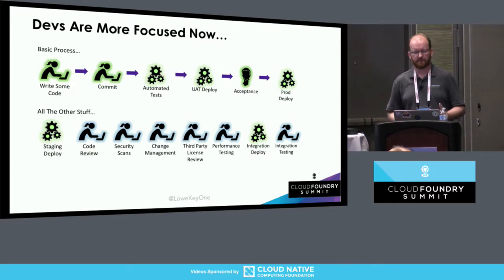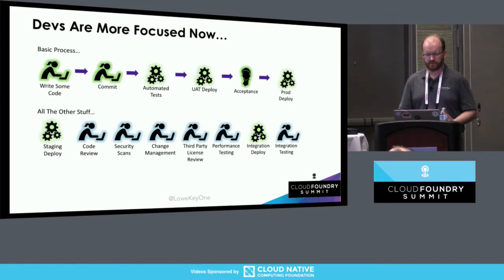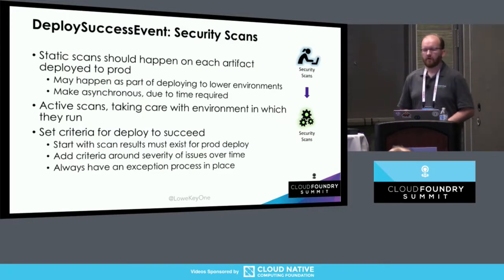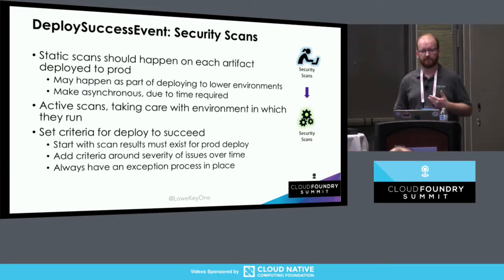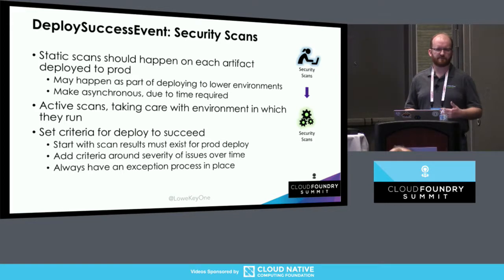Once we've started building out this automation, we get to this cool place where a lot of that work that people were doing before has now been automated. But we still have a lot of things that people are doing manually - that's where the event system gets to be really pretty powerful. One of the things we've started doing is saying on every successful deploy, let's run a security scan. That can be whatever kind of scan you want - we've done static scans, but through that event model you can run whatever you want and say, does this app actually meet whatever security criterion you have in your organization?